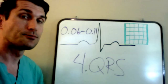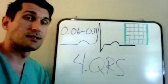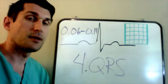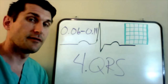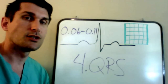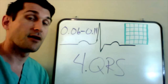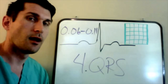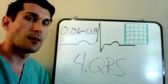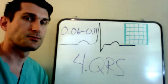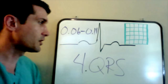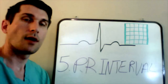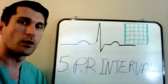If the QRS is less than 0.06 seconds, that could mean a supraventricular tachycardia — a very high heart rate, usually above 140 beats per minute, originating somewhere above the ventricles. So the QRS holds a lot of valuable information.